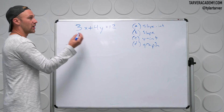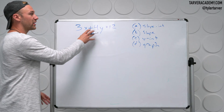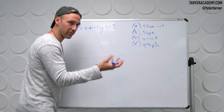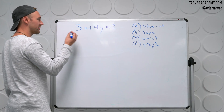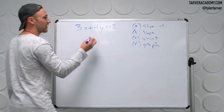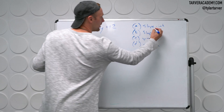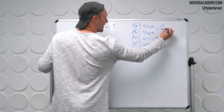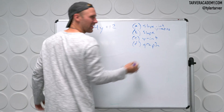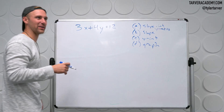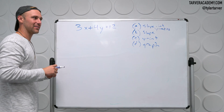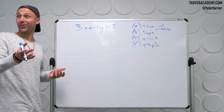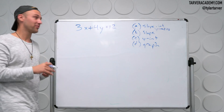First thing we need to do is know what slope-intercept form is. Everybody, same time: y equals m of x plus b. That was very creepy, kind of — the way it was trance-like. I apologize for that, but you did a great job, guys. Thank you for your input.